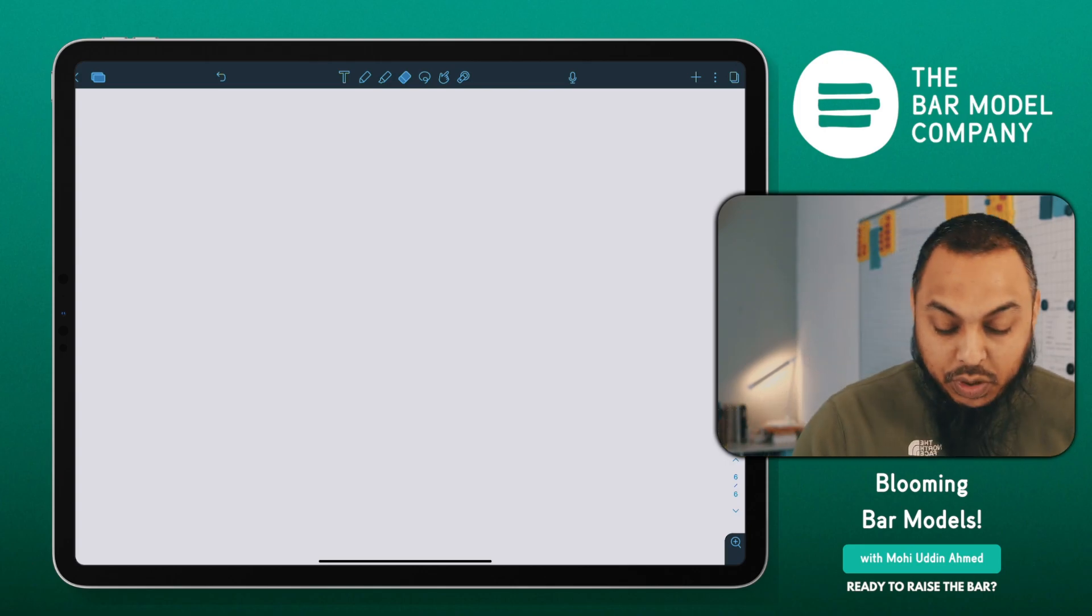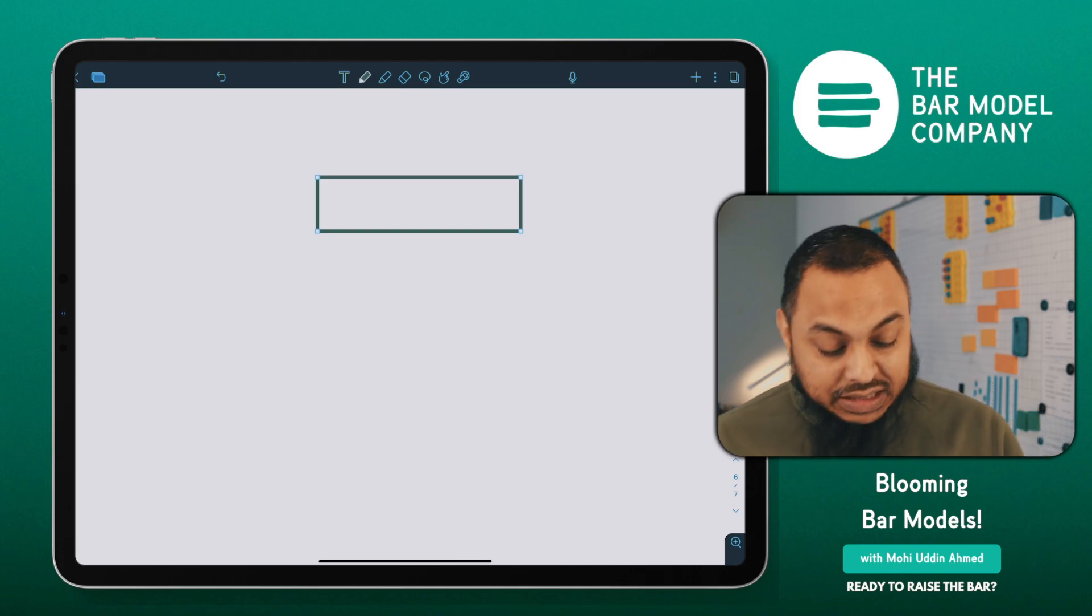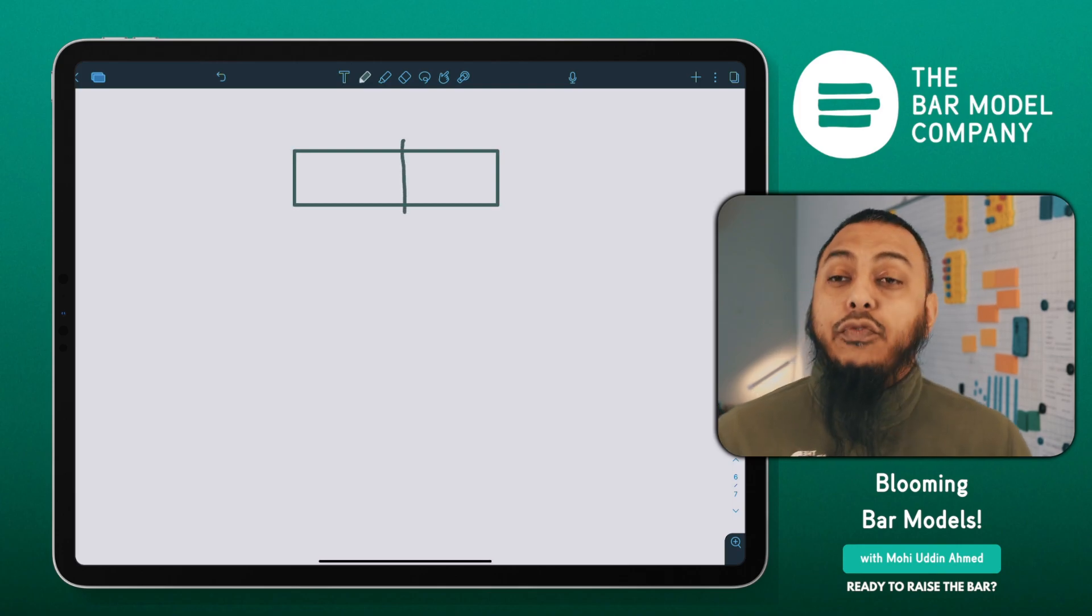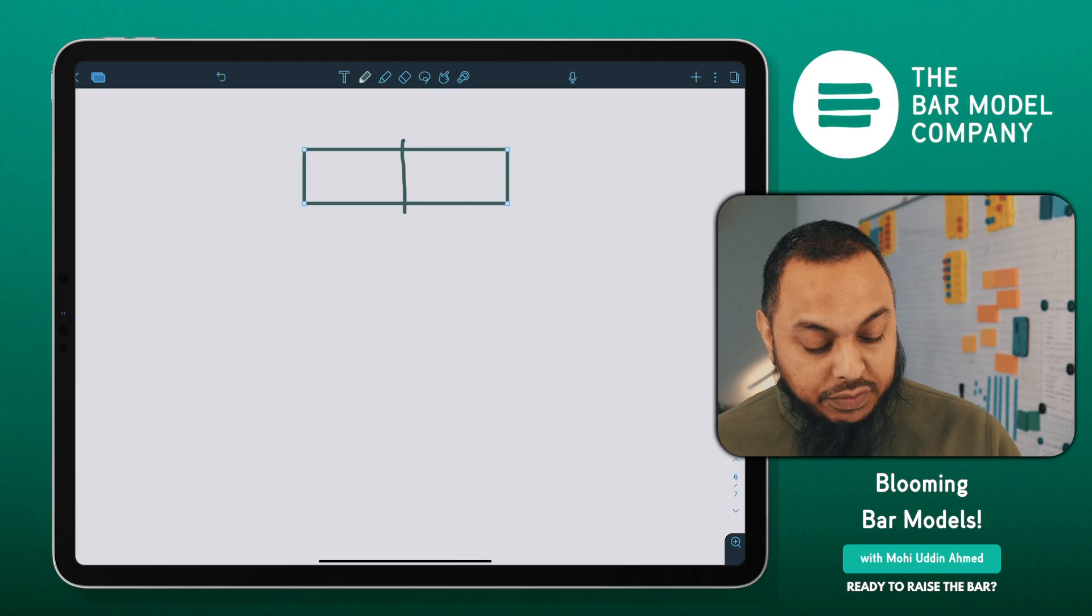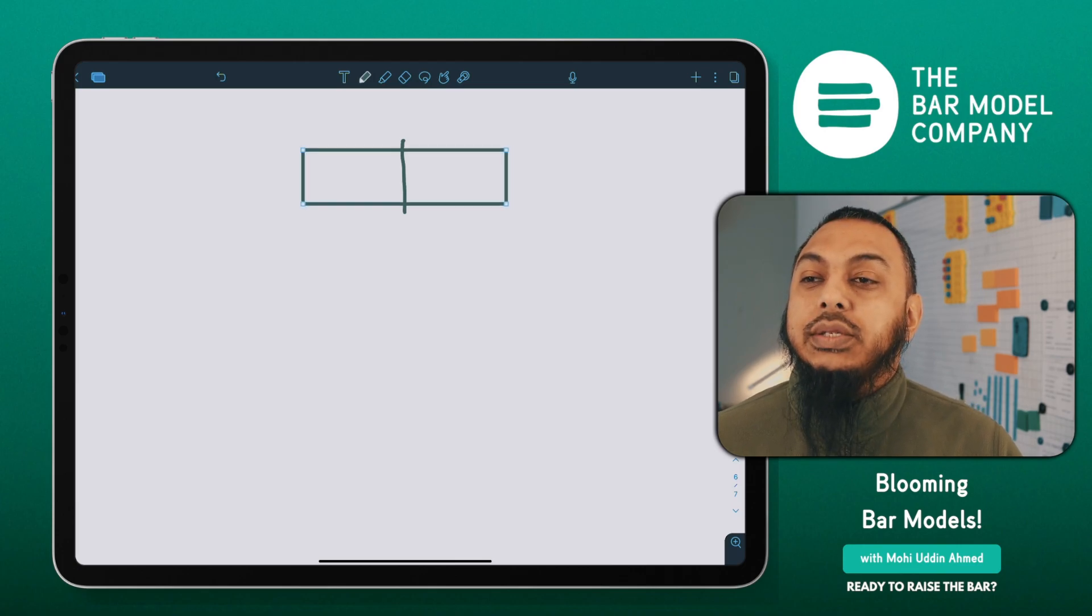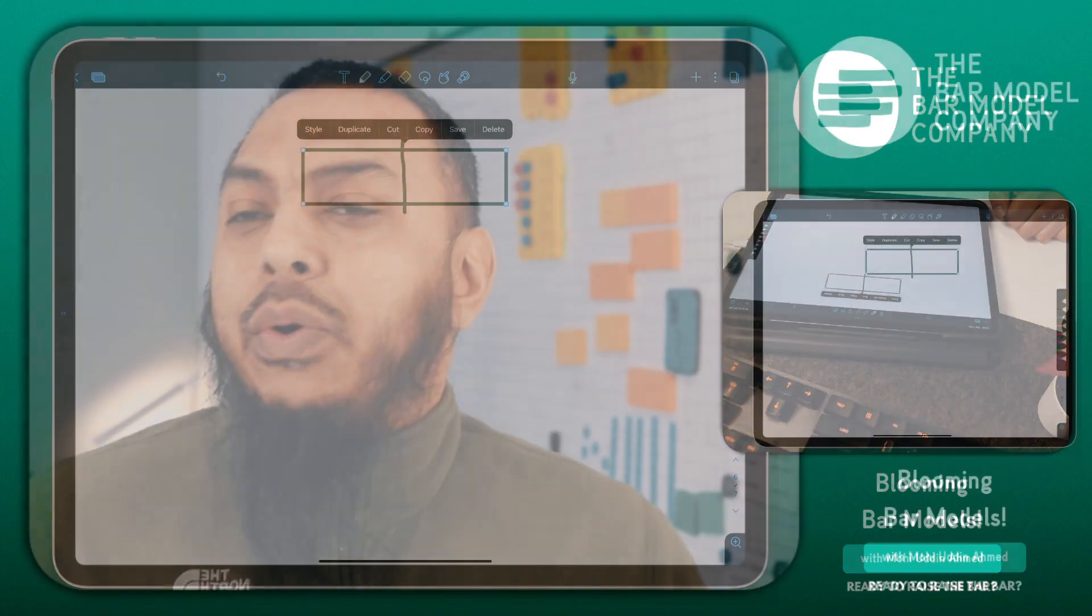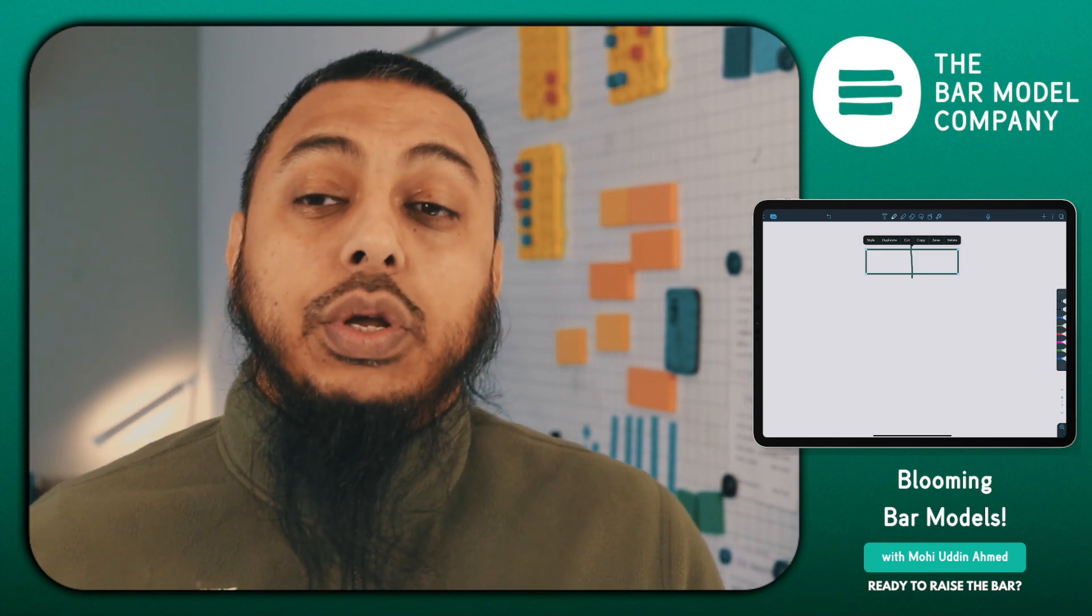So we're going to start off with a basic fraction, so let's draw a bar to represent our whole. So we've got a whole there, and if I split this whole into two equal parts like so, I've got two equal parts there. How are we going to be able to show equivalent fractions with these two equal parts? What do I need to do? How is this going to look like in a lesson? That's another important question.